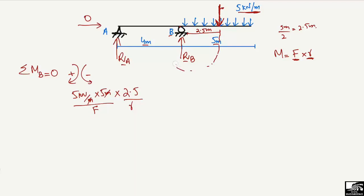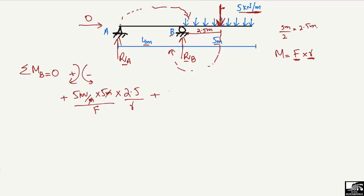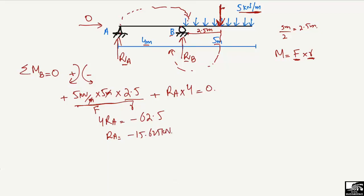This produces a moment about point B in the clockwise direction, so it is taken as positive. The next load creating a moment about point B is RA, acting upward and also producing a clockwise moment about B, so it is also positive: plus RA multiplied by the moment arm of 4 meters, equal to zero. Shifting the terms, 4·RA equals minus 62.5, so RA equals minus 15.625 kilonewton.